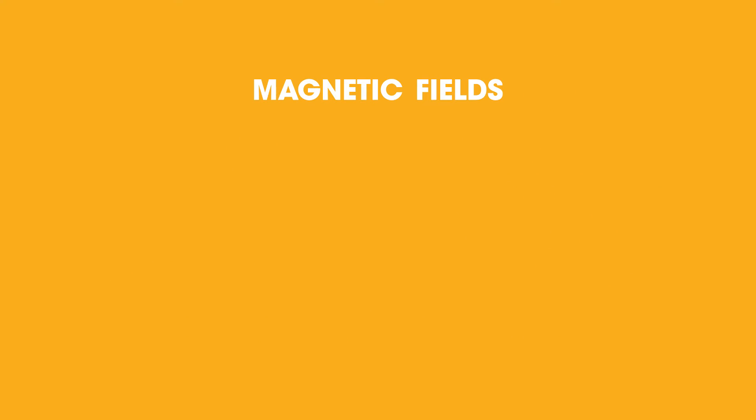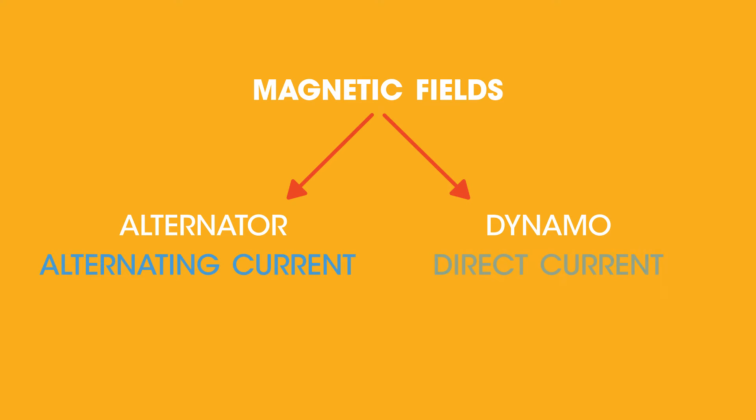In this video, we're going to look at how a change in magnetic field is used by an alternator to generate an alternating current and a dynamo to generate a direct current. That's pretty easy to remember: A for alternator and alternating current, and D for dynamo and direct current.